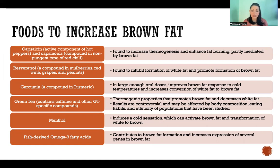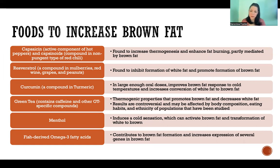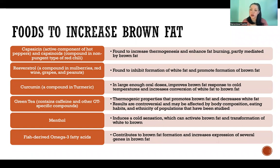Curcumin is a compound in turmeric. If taken in large enough doses, it can improve brown fat response to cold temperatures — so it'll activate more efficiently in response to cold — and it increases conversion of white fat to brown fat, essentially the browning of white fat.